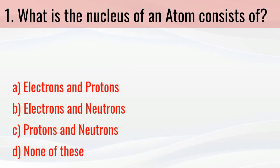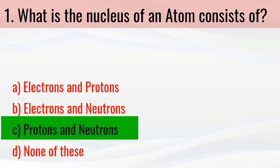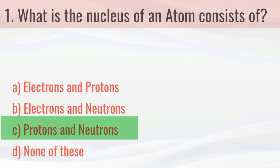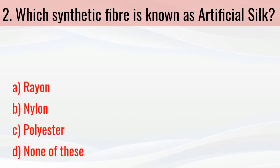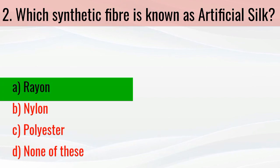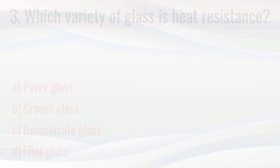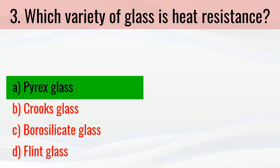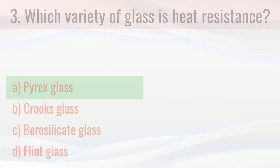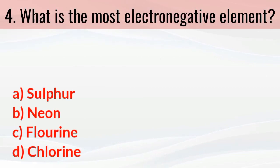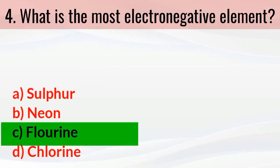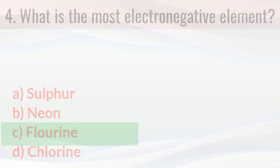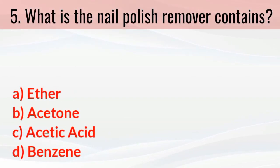What is the nucleus of an atom consists of? The right answer is protons and neutrons. Which synthetic fiber is known as artificial silk? The right answer is rayon. Which variety of glass is heat resistant? The right answer is pyrex glass.